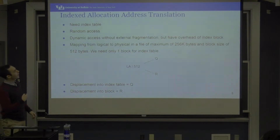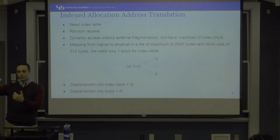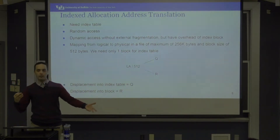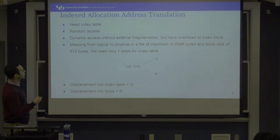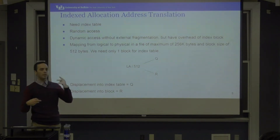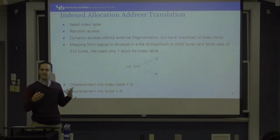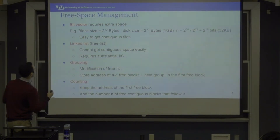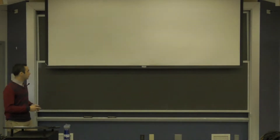Last session we discussed index allocation: we hold an index table in one separate block per file, and that index block links to the data blocks of a file. This way we can have larger files — larger than one block. The slides say 256 kilobytes maximum file size if you have one block for the index table, but during last lecture on the blackboard I calculated 16, which was off by too much.